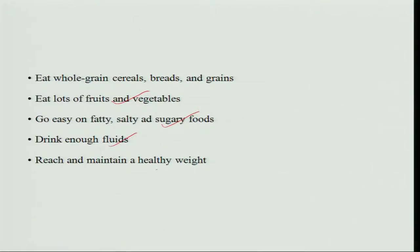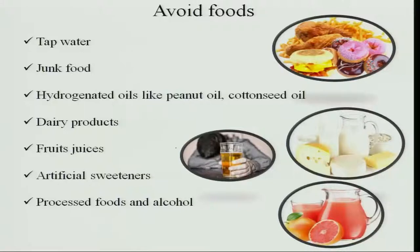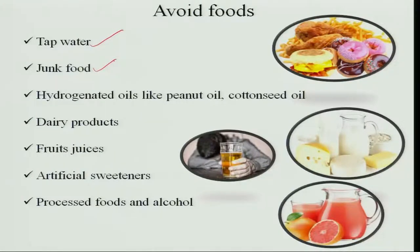Food should be less in fat, less in sugar, and less in salt. Enough fluid should be taken and normal weight maintained. Some foods have to be avoided: tap water should be avoided because bacteria may increase infection in the already vulnerable liver — boiled and cooled water is best. Junk food should be avoided as it contains lot of fat and hydrogenated oils. Dairy products, fruit juices, and artificial sweeteners require extra metabolism in the liver. Processed foods and alcohol are also metabolized in the liver and should all be avoided.